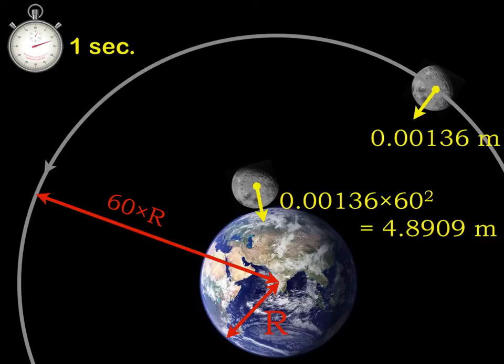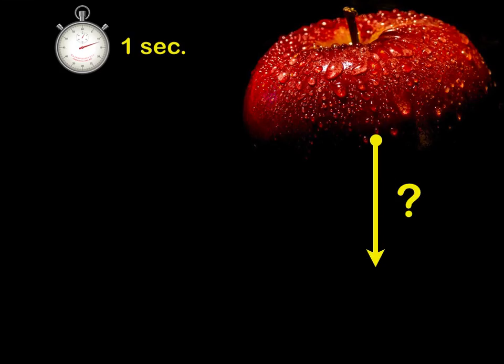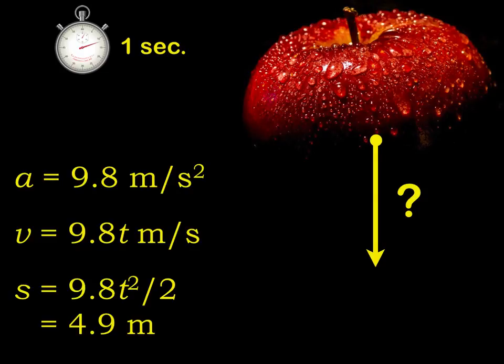So that's what I need to compare to the apple then. How far does an apple go in one second anyway? That's a standard physics problem. We know the gravitational acceleration 9.8 meters per second squared.